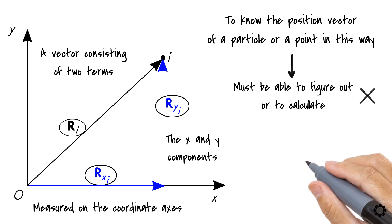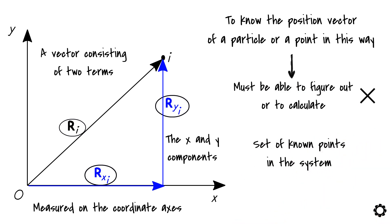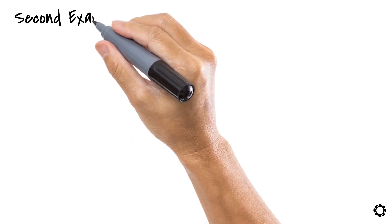And let me tell you, most of the time this is not possible. For sure there is a set of known points in the system where you know right away what the component's values are, but as everything is moving so complexly, this is definitely not a trivial task. How do we manage to overcome this problem then? Let's look at our second example.